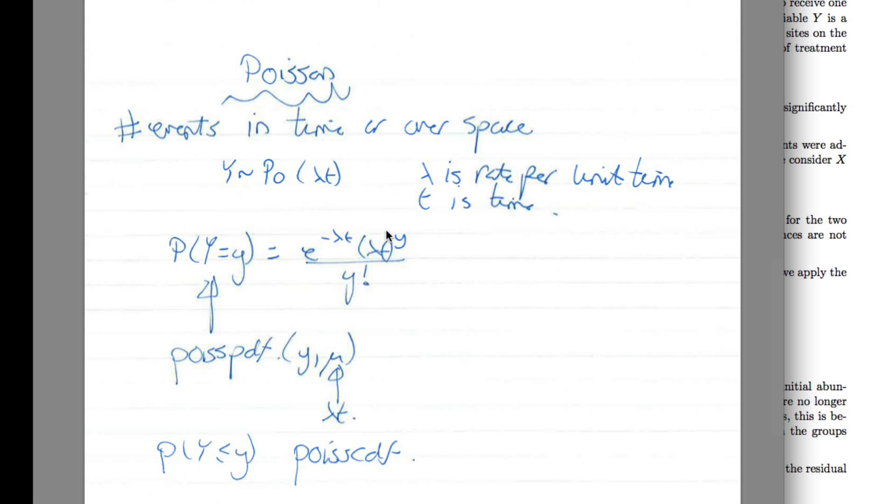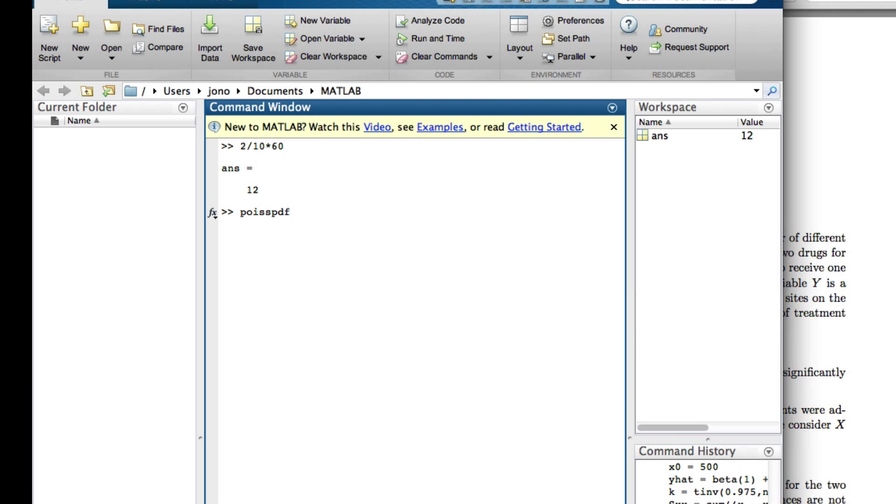I can do this calculation by hand, or instead I can use poisspdf. So poisspdf, I've got 0, I've got a rate of 12. That gives you a really small number, 6 times 10 to the—it didn't really help. I just wanted to have anything, but that's all right.